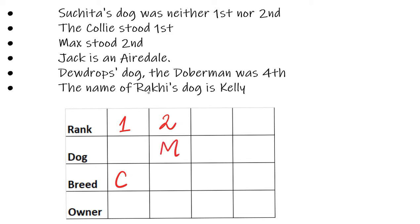Then it says Jack is an Airedale. Jack cannot come in the first position because that is already Collie, and Jack cannot come in the second position because that is already Max. So Jack is an Airedale in the third position. Then it says Dewdrop's dog, the Doberman, is fourth.